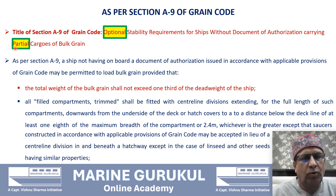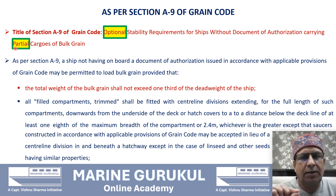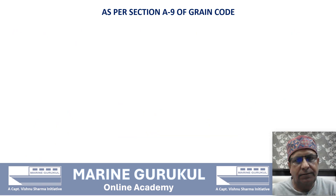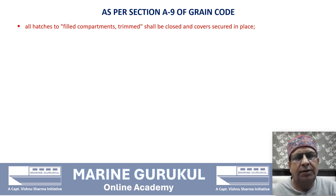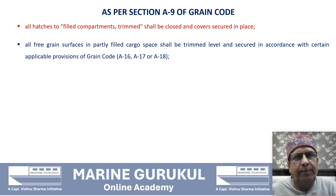To recap: condition one was that the total grain in bulk shall not exceed one-third of the deadweight of the ship. Condition two is the requirement of centerline divisions extending below the deck to a minimum of one-eighth of the maximum breadth of the compartment or 2.4 meters, whichever is greater. Continuing with further conditions: all hatches to filled compartments, when trimmed, shall be closed and covers secured in place. All free grain surfaces in partly filled cargo spaces shall be trimmed level and secured in accordance with applicable provisions of the Grain Code — specifically Section A 16, Section A 17, or Section A 18.